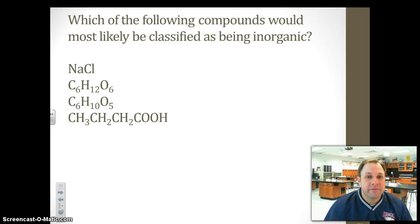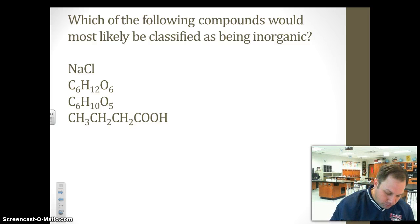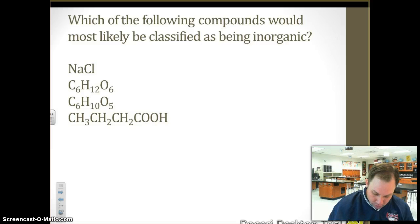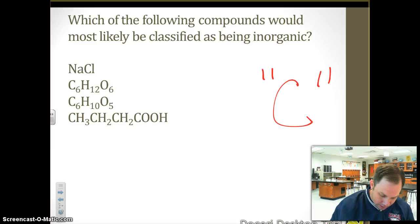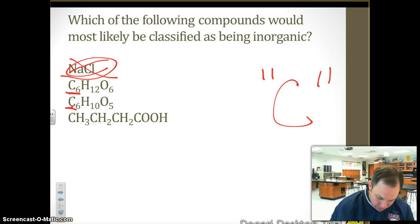Which of the following compounds would most likely be classified as being organic? Again, looking for carbon to be organic. NaCl — no carbon. Here we have a carbon. Here we have a carbon. Here we have a carbon. Here we have a carbon.